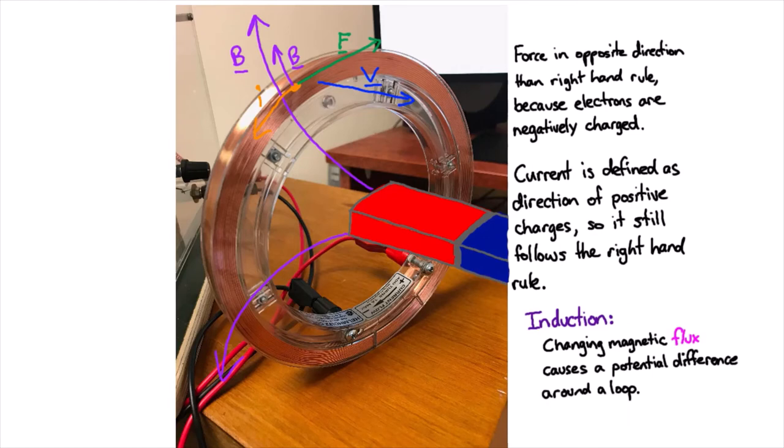so-called because the changing current in one loop induced a current in the other loop. And it was James Maxwell and Oliver Heaviside who later went on to quantify that and really describe exactly what was going on.